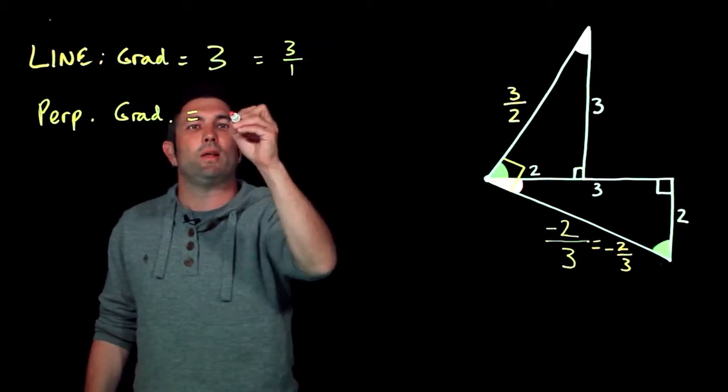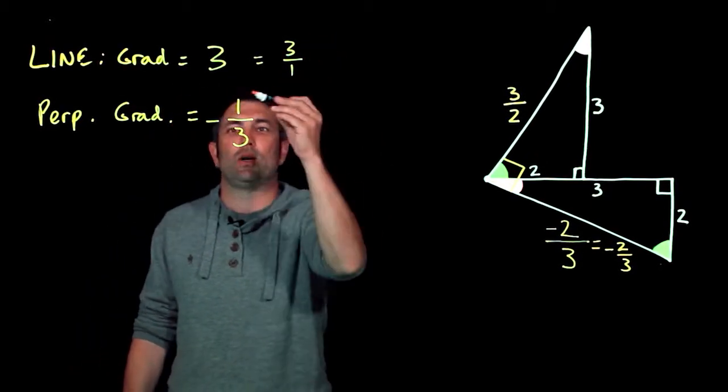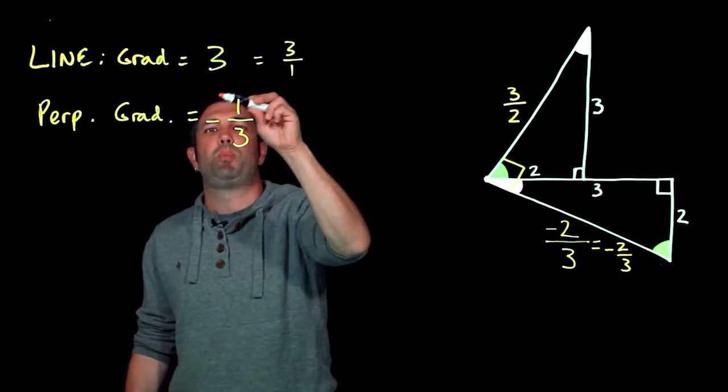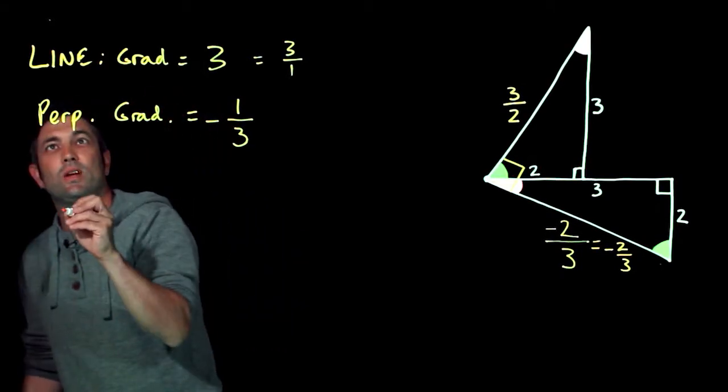Turn that fraction upside down, change the sign. So if the gradient of a line is 3, its perpendicular line gradient would be -1/3.